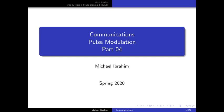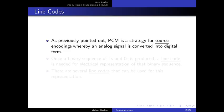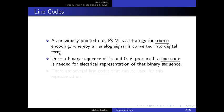In today's lecture we'll continue our journey with pulse modulation. In the previous lecture we learned about pulse code modulation (PCM), where we start with an analog message M(t) which is first sampled, then quantized, and the output from the quantizer is encoded in binary bits or a binary code word. PCM is a strategy for source encoding where a message from an analog source is converted into digital form.